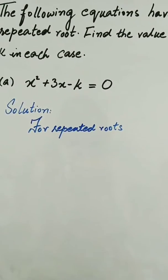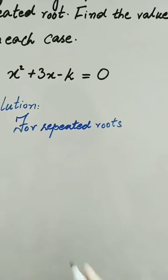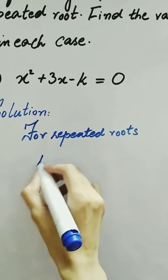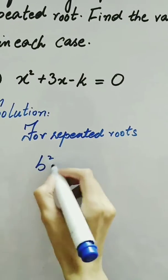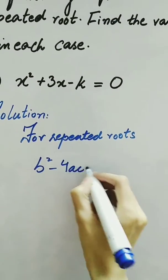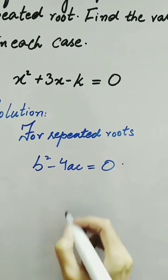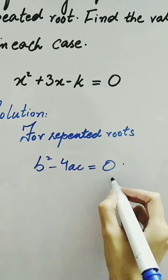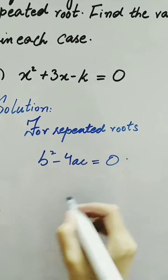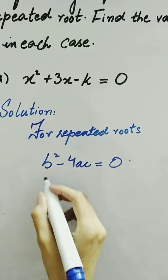As we know that for a repeated root, the expression b squared minus 4ac is equal to 0. By using this expression, we will find out the value of k.